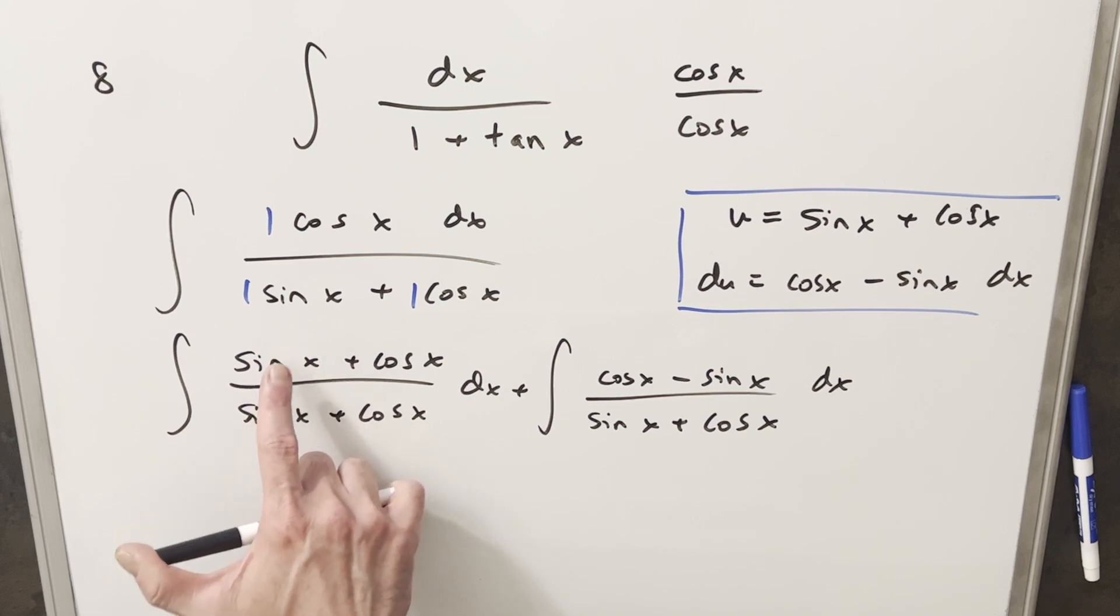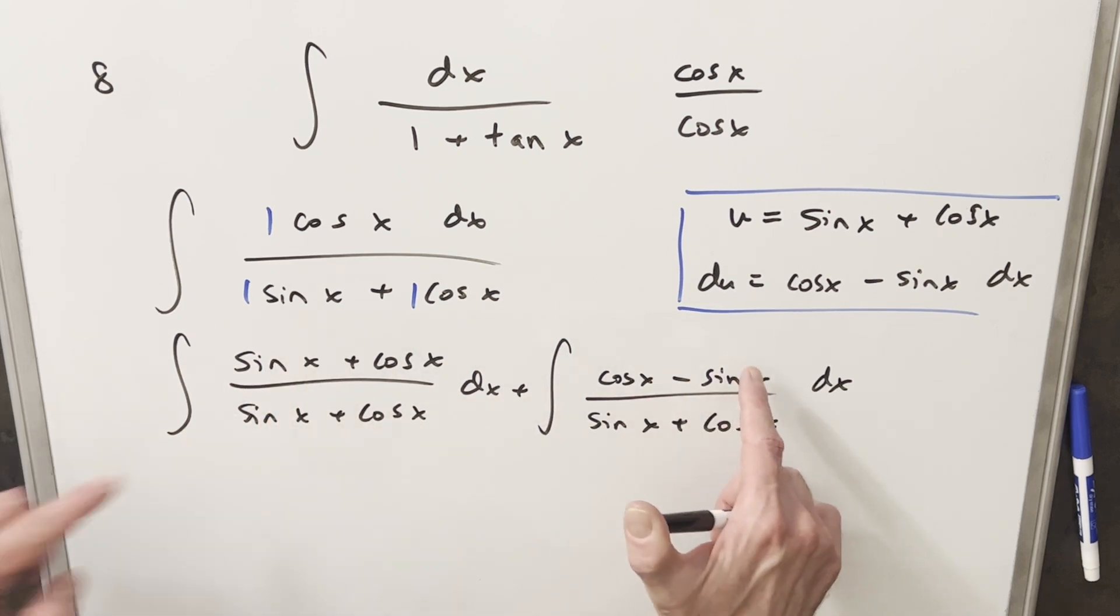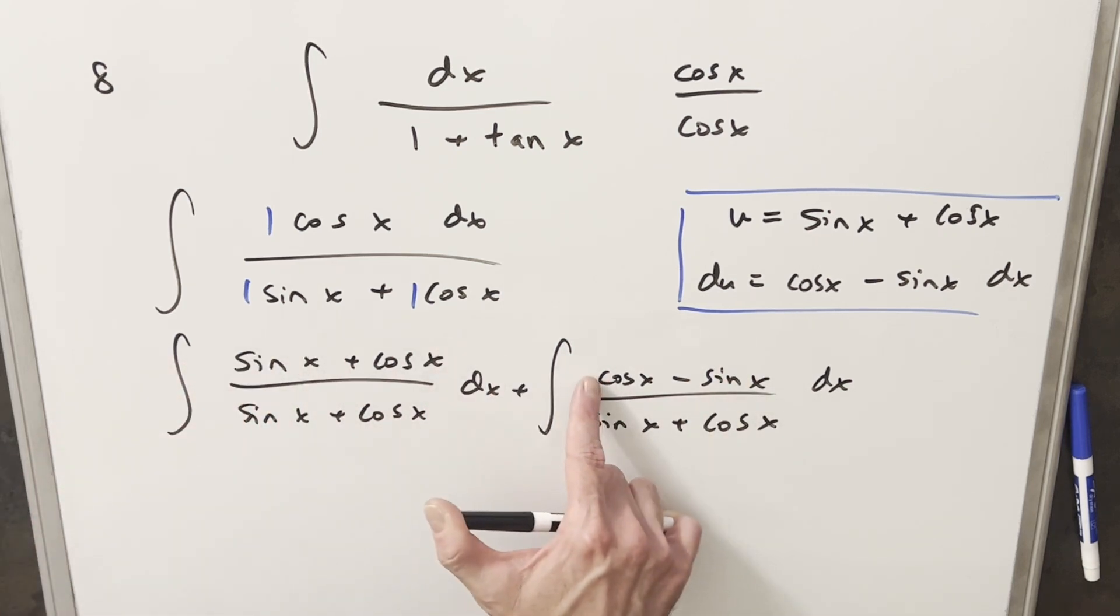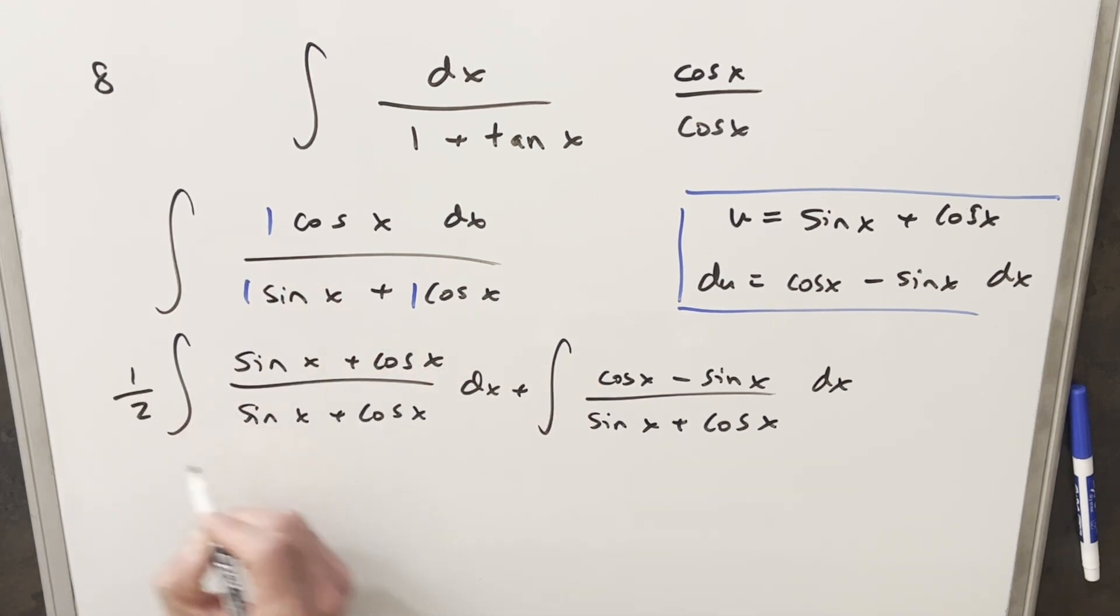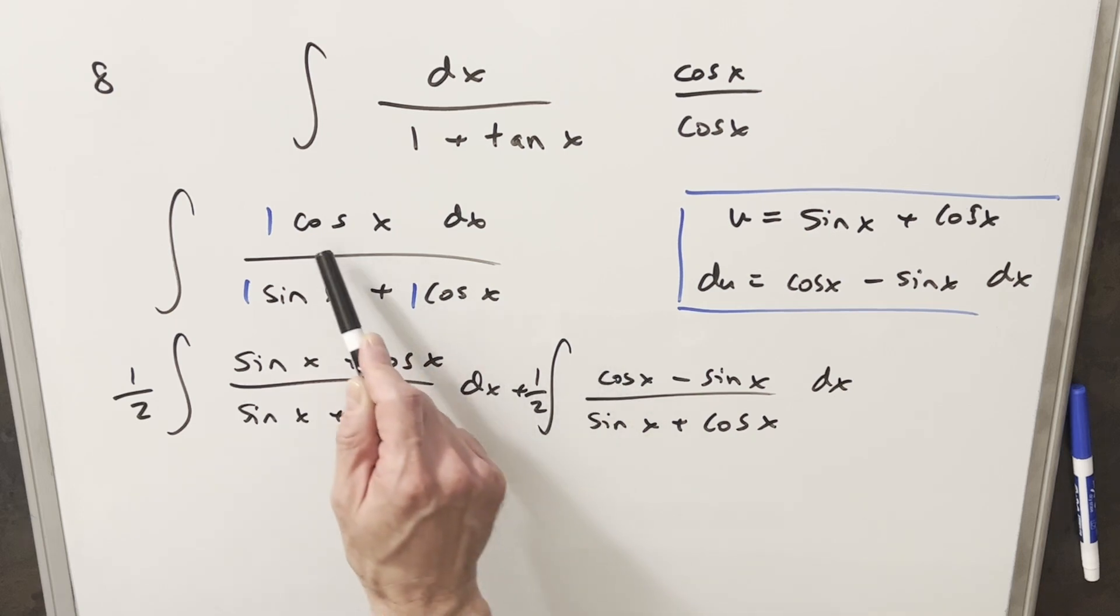If we added these together, we have sine x minus sine x, so the sines cancel, but we end up with two cosine x. Well, we need a one here. It's really easy to fix. We just multiply by one half in front here and here. And now if you put these back together, you'll notice the sines still cancel. Half cos x plus half cos x gives me one cos x. So I haven't changed it, and we've set up two really easy integrals.